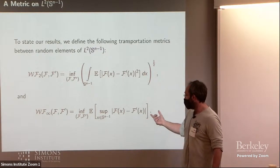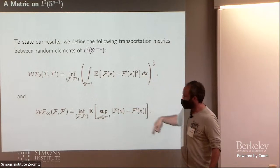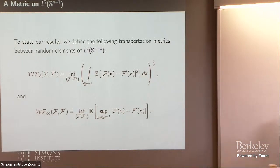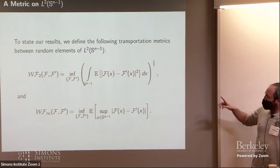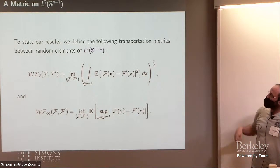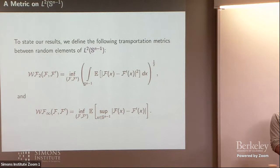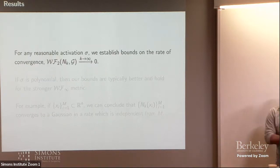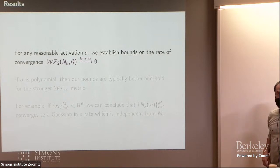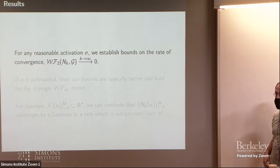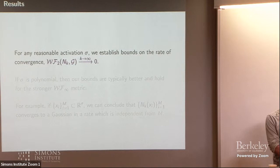And you can also look at the stronger metric, which takes the uniform distance. So we're just looking for a coupling which minimizes the maximal deviation, the expected maximal deviation between the two random functions. So we want to prove a rate of convergence with respect to those metrics.